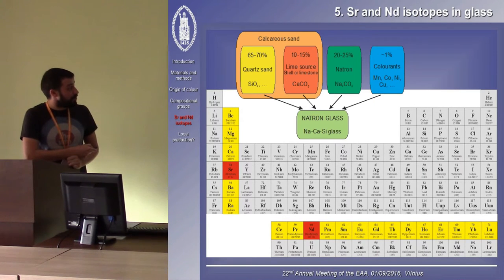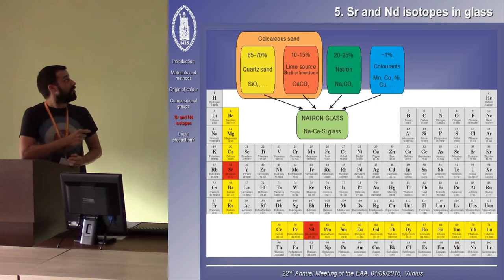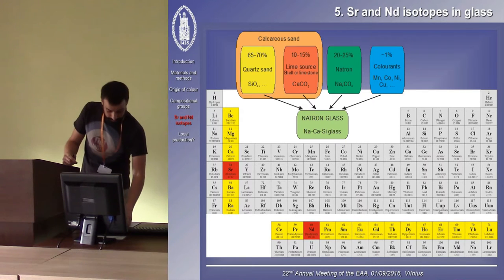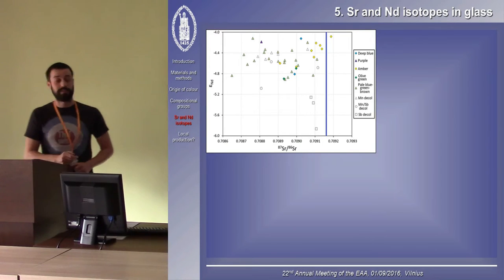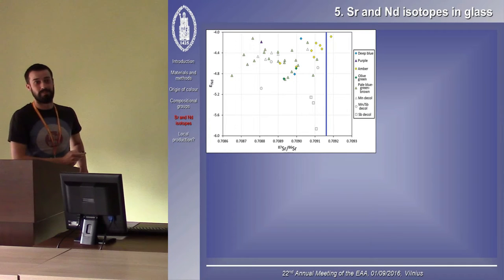Neodymium is a rare earth element belonging to the lanthanide series, and neodymium in natron glass is mainly coming in with the non-quartz mineral fraction of the sand raw material. The neodymium isotopic composition in the glass will hence be a reflection of the source of the silicate. So we analyzed a selection of our glasses for strontium and neodymium isotopes.